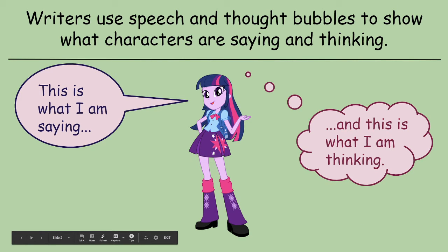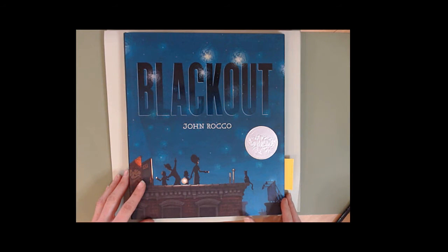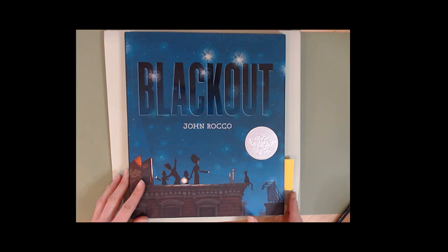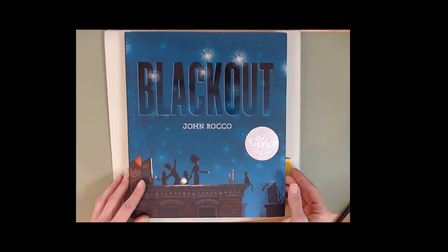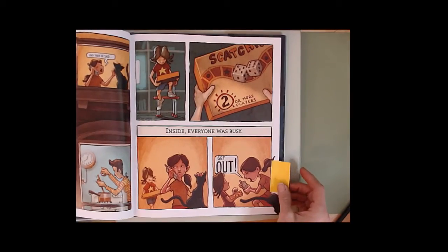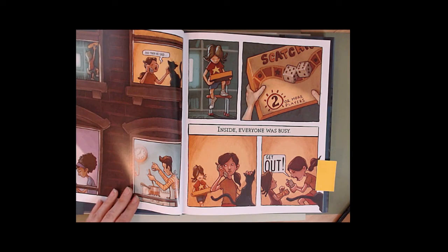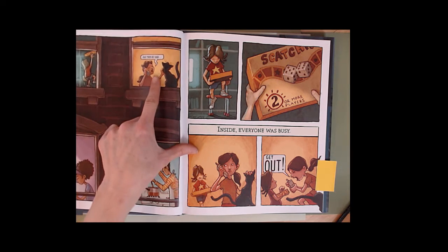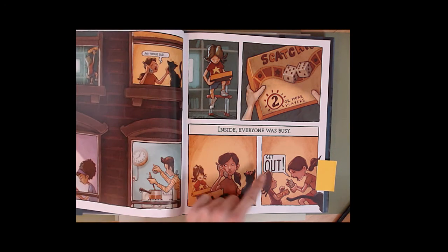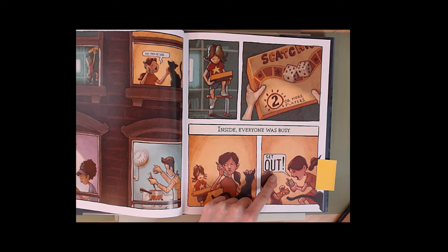Let's look at another book. This book is Blackout by John Rocco. I don't know if you remember it or not, but we did read it in class. This is the book about the electrical outage in a city and what happened when all the electric went out. What do you notice about these pictures? How can you tell who's talking? And in this one, is she talking or yelling? How can you tell?